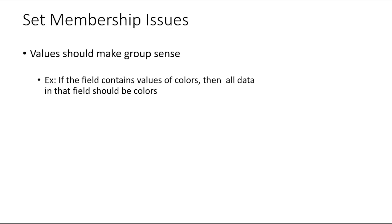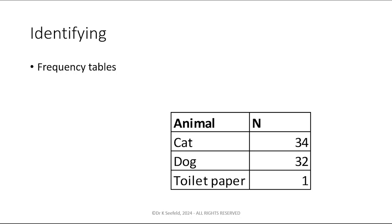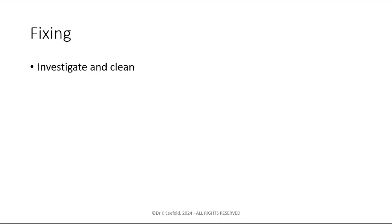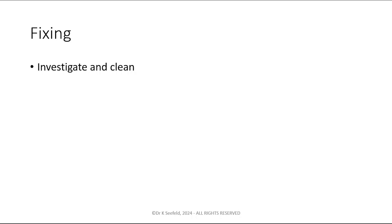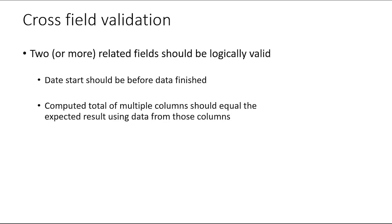Set membership is kind of like data range, except set membership is with categorical data, and data range is with numeric data. Set membership basically means that the values should make group sense. So if you have a field that contains values of colors, the data in that field should be colors and not other weird things. For example, here we have a frequency table of animals and somebody entered 'toilet paper' — that would be a set membership violation. How to fix these: investigate them and clean them if you can. In some cases, you can use an 'other' category for things that don't really make a lot of sense and make a note of that.